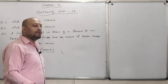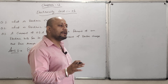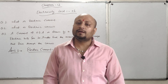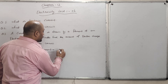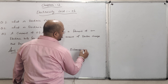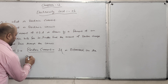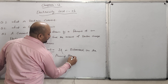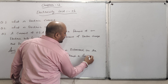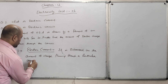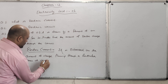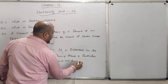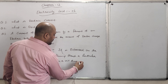So electric current is expressed as the amount of charge flowing through a particular area of cross-section in a particular direction in a unit time. Electric current is defined as: the amount of charge flowing through a particular area of cross-section in a particular direction in a unit time.